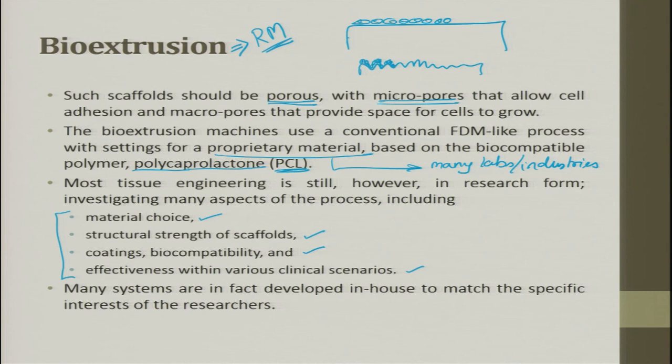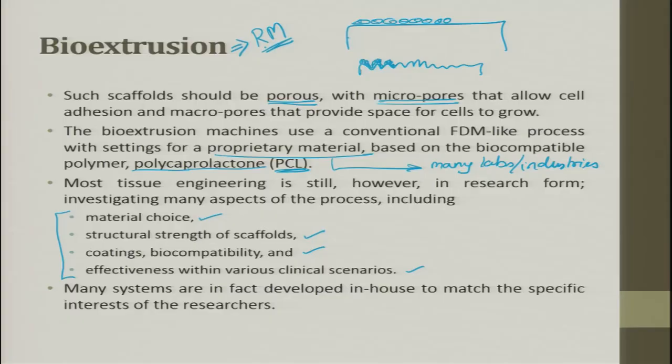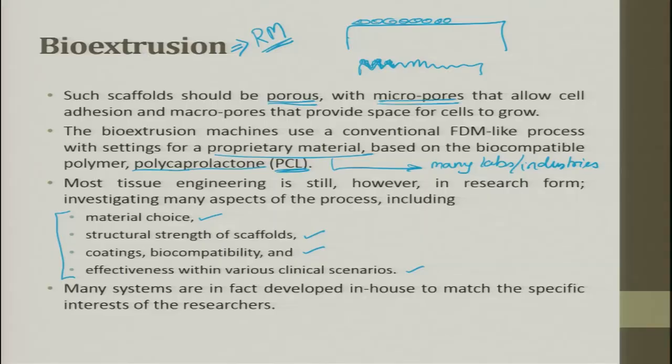In bio extrusion, people are now talking about not just polymers — slowly they have started moving towards ceramics such as hydroxyapatite, and are also now talking about extruding metals directly. These are the challenges being discussed. The product's feature size is very important, as is the surface roughness, which can be selectively made for a cell to adhere or not to adhere. Bio extrusion is one of the major processes leading towards rapid manufacturing.